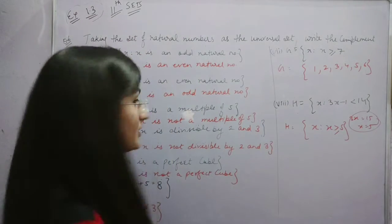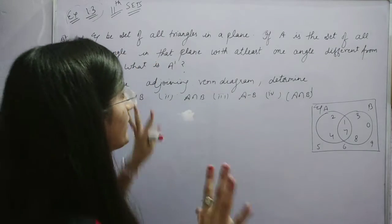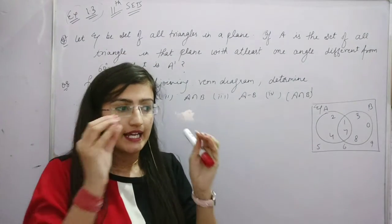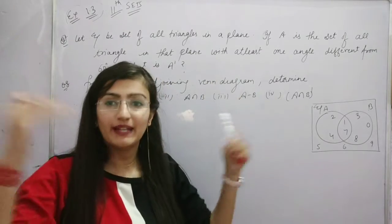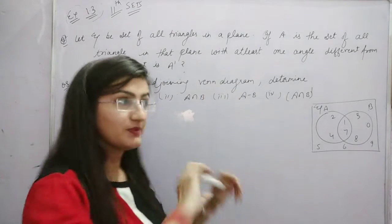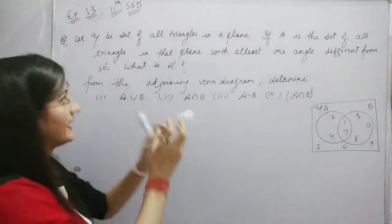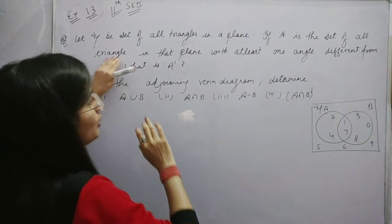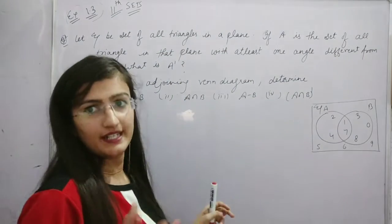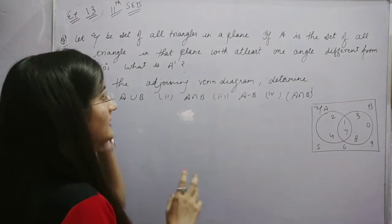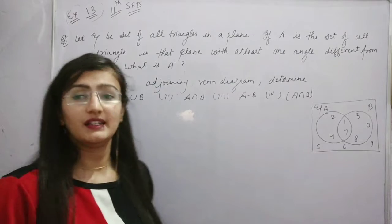This was our sixth question. Now the seventh question. Let's consider the set of all triangles in a plane as the universal set — the set of all triangles. If set A contains triangles where at least one angle is different from 60 degrees, what is A's complement?